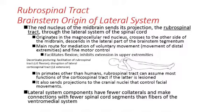The rubrospinal tract gets its name from its origin — 'rubro' means red in Latin, referring to the red nucleus. The red nucleus of the midbrain sends its projection via the rubrospinal tract through the lateral system of the spinal cord. It originates in a nucleus called the magnocellular red nucleus, crosses to the other side of the midbrain, and then descends in the lateral part of the brain stem tegmentum. This system is the main route for mediating voluntary movement, moving distal extremities and fine motor control.